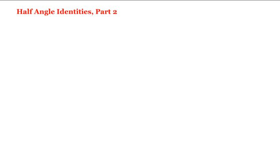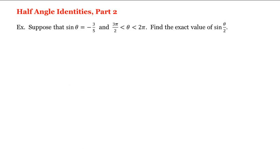Let's work with the half-angle identities. For example, if sine of theta is negative three-fifths and theta is between three pi halves and two pi, we'll find the exact value of sine of theta over two.